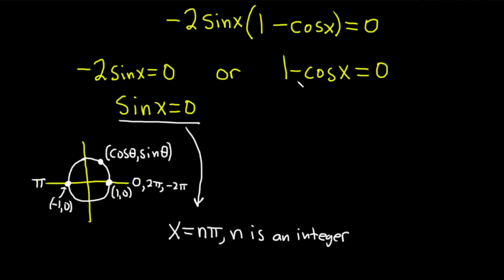Now let's solve the second equation. So we can just subtract 1. We get minus cosine x equals minus 1. We can divide by negative 1 or multiply if you prefer. And you get cosine x equals 1.